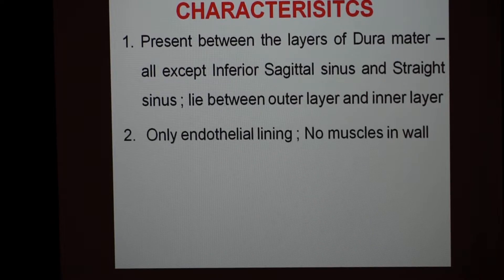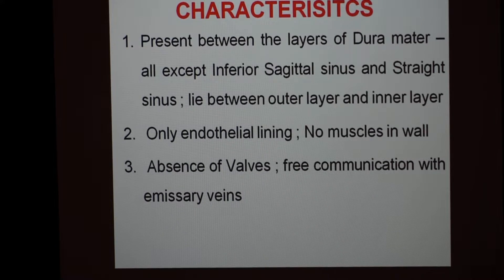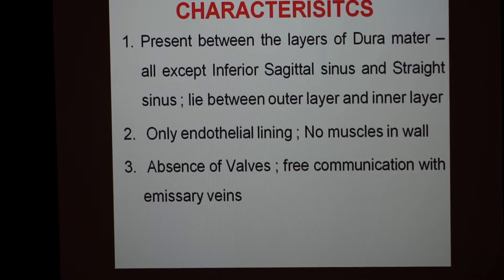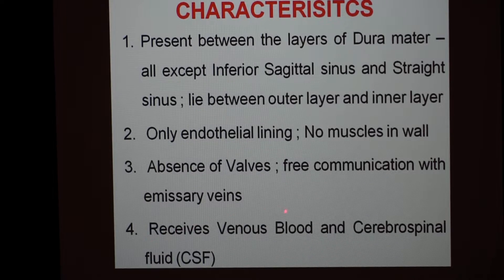Why are they called sinuses? Because they have only an endothelial lining and there is no muscle layer in the wall. Also, there is absence of valves, and hence they can freely communicate with the other veins on the superficial aspect of our skull — that is on the face, scalp, and other areas around the skull — right through the emissary veins. Lastly, the sinuses receive venous blood and cerebrospinal fluid both. These are the basic characteristic features of the dural venous sinuses.